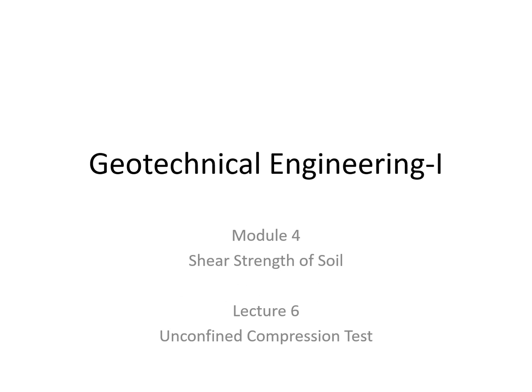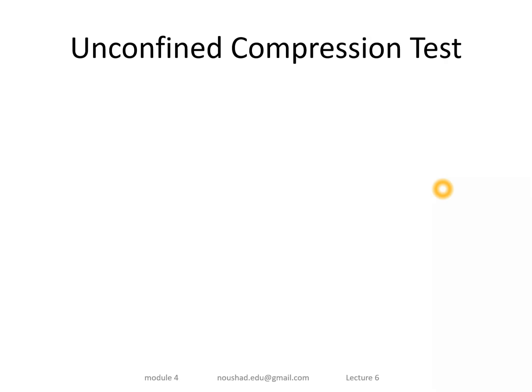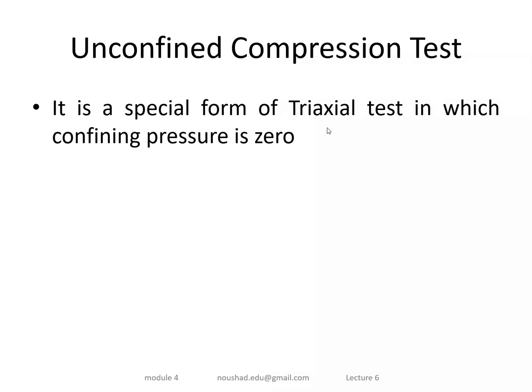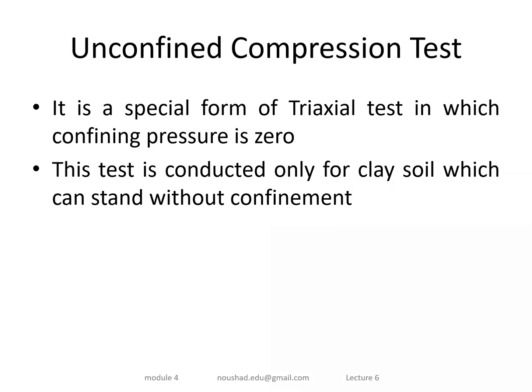In this lecture we are going to discuss the Unconfined Compression Test (UCC). The UCC test is a special type of triaxial test. The key difference is that the confining pressure sigma 3 is zero. No side pressure is applied. The test is given to clay soil as a self-supporting cylindrical specimen without any confinement.